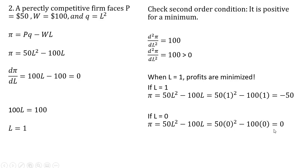In this case, it would be zero. And if we were to produce more than one, profits would actually be higher. So L equals 1 is indeed a minimum.